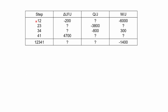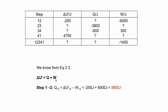We have four steps, and for each step we have internal energy change, Q, and W. Let's look at step 1 to 2. We have been given the change in internal energy and W, but we don't know Q. From equation 2.3, we know for a closed system the change in internal energy equals Q plus W. We have one unknown and one equation, so plugging in the values of ΔU and W gives us Q very easily.